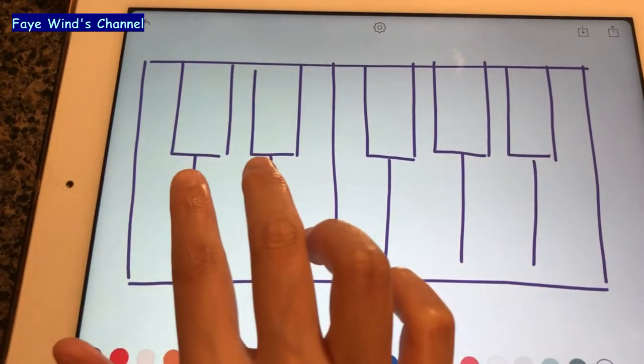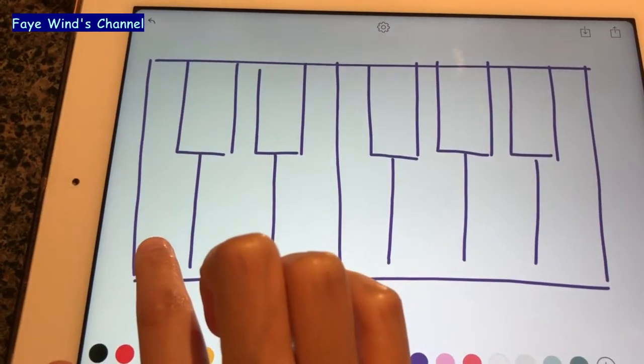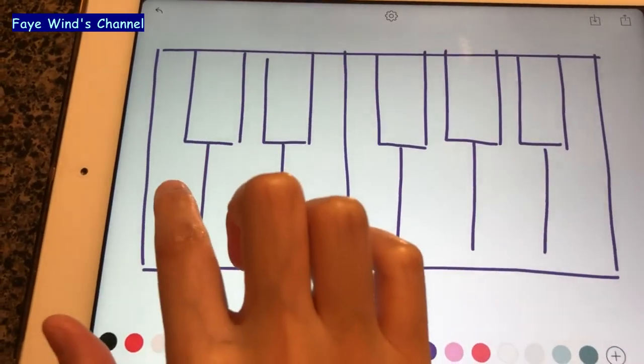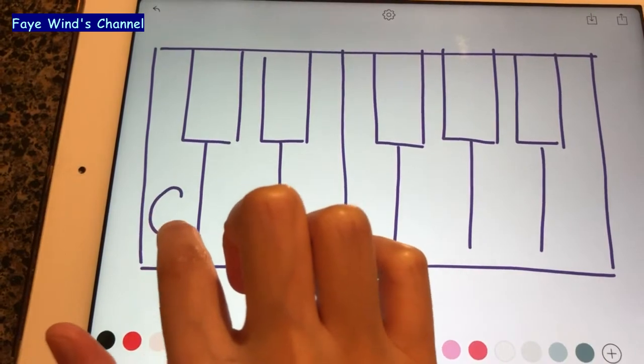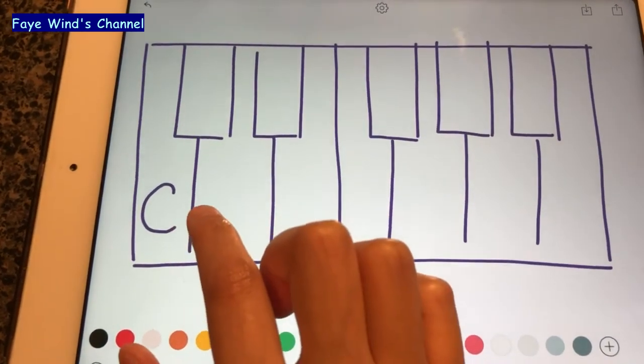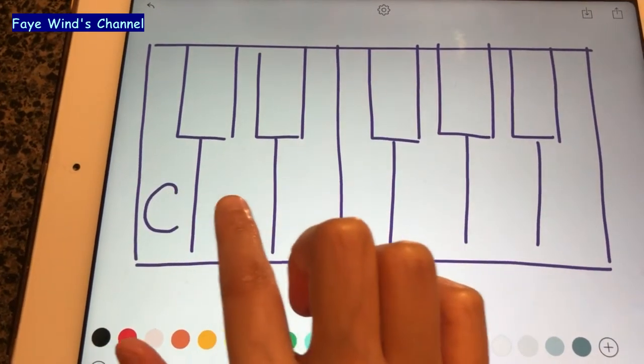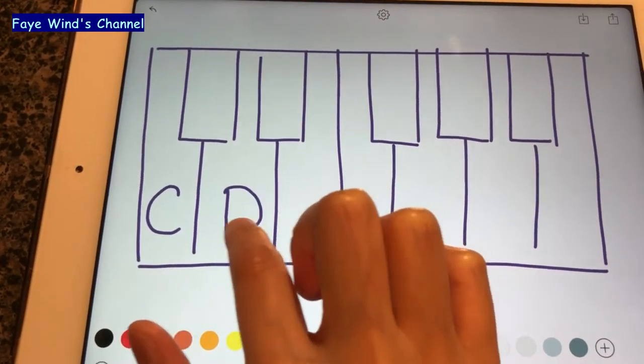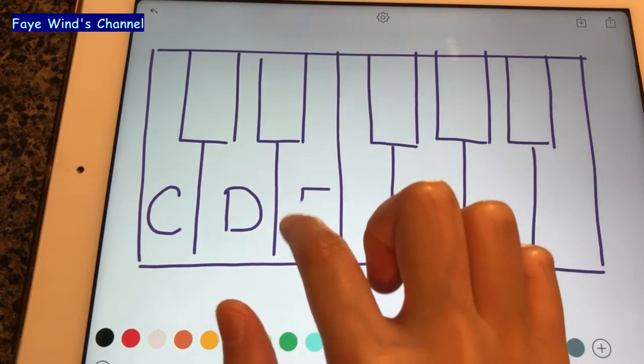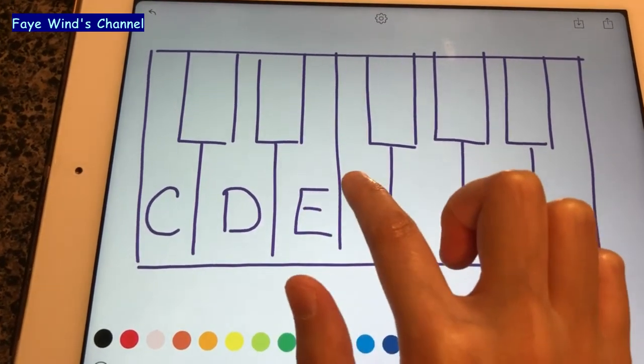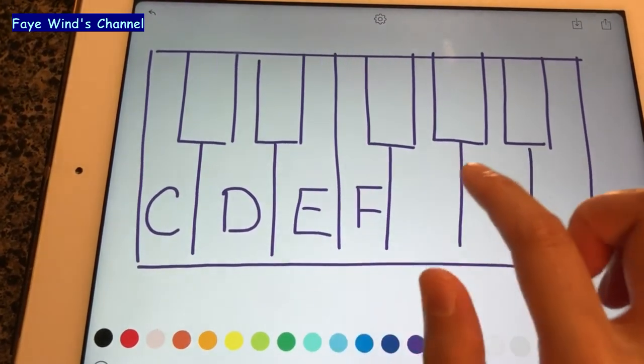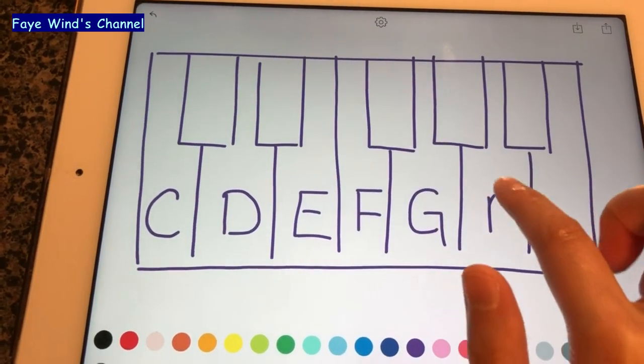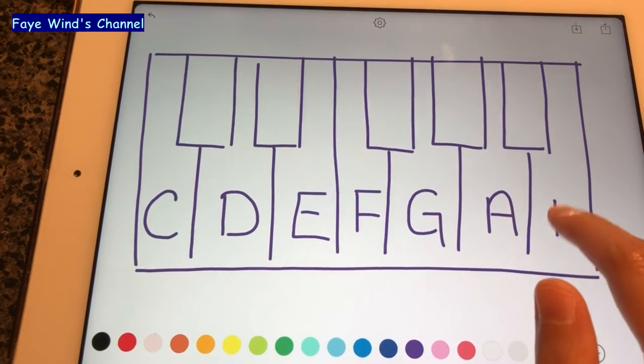For beginners, the white key that is right on the left hand side of the two black keys is always C. And I will tell you the rest of all these white keys. It will be D, E, F, G, A, and B.